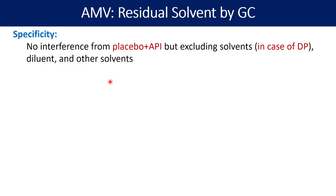Methanol and ethanol should also be separated from each other. That is the purpose: no interference from placebo plus API (excluding solvent) in the case of a drug product. The diluent assessment is common for both drug product and API. This is how you conduct specificity for residual solvent by gas chromatography.